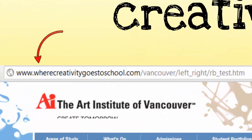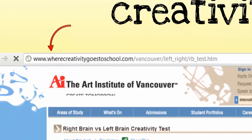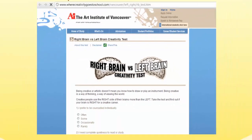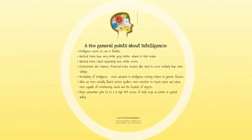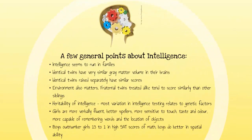Go to the link below to try the self-creativity test and see where you rank. Here are a few general points about intelligence. First of all, it seems to run in families — people with the same genetics seem to share similar intelligence. Identical twins have very similar gray matter volume in their brains, and identical twins who have been raised separately have similar IQ scores. Genes for genius have been located on chromosome 6 in humans.